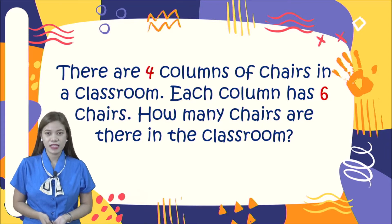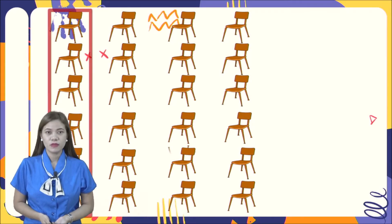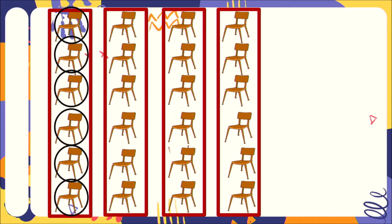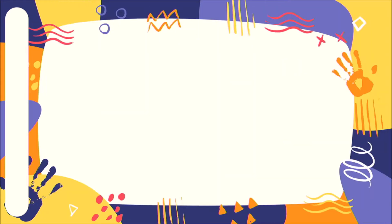Now let us look at the next slide. I have here a group of chairs. Let us count the columns: one, two, three, and four. How many columns of chairs do we have? Four columns. Now, how many chairs are there in each column? Let us count all together: one, two, three, four, five, six. We have six chairs. So our mathematical sentence for this equation is: four columns times six chairs is equal to 24.